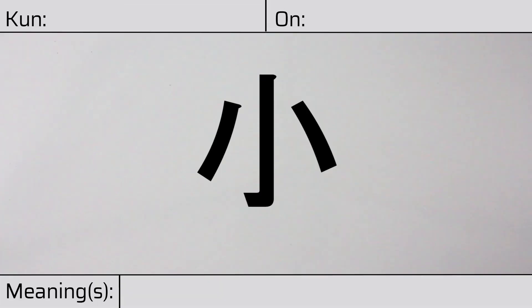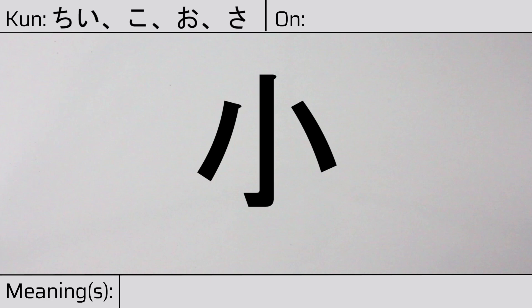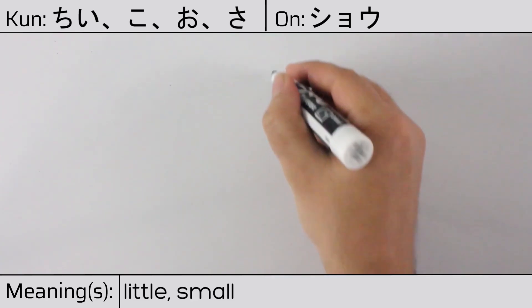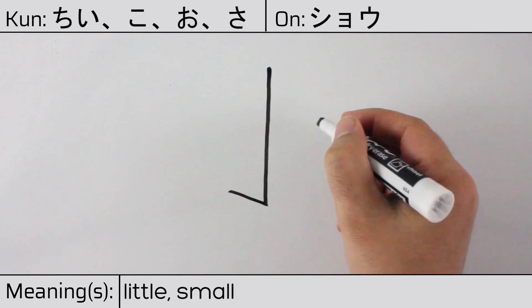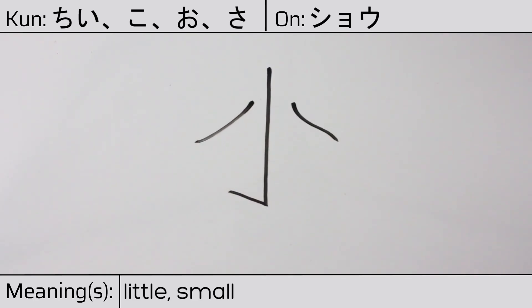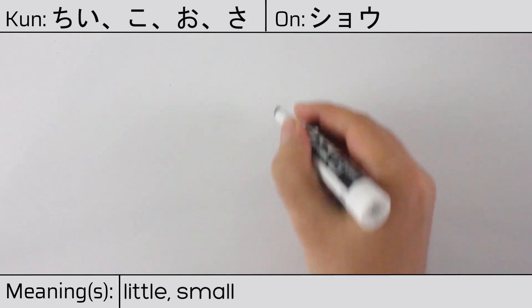Welcome to this lesson on Japanese kanji. Today, we'll be discussing this character. This kanji has kunyomi or Japanese readings of chi, ko, o, or sa, and it has an onyomi or Chinese reading of shou. This character has the meanings little or small. Here is the stroke order.